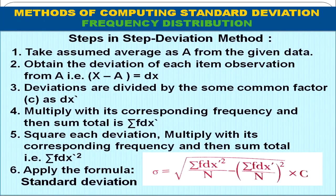The last method is the step deviation method for frequency distribution. Steps: find A, then dx, then dx' = dx / c, then Σfdx' and Σfdx'². The formula is: σ = √(Σfdx'² / n − (Σfdx' / n)²) × c, where c is outside the square root. The formula is the same as for discrete series.